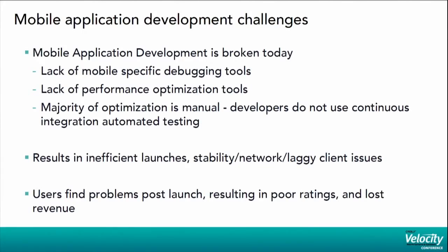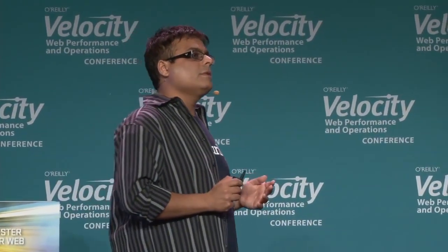What's the real problem with mobile application development today? Lack of debugging tools, lack of performance optimization tools, and lack of an automated continuous integration platform where you can run your tests and get results fast. Due to lack of these tools, companies spend a lot of time manually testing their apps pre-launch, using manual testing for flushing out performance issues and functional stability issues. But this results in long release cycles, which means broken and incompletely tested apps hitting the market. Users find your bugs, users give you poor reviews and ratings, and you lose revenues.